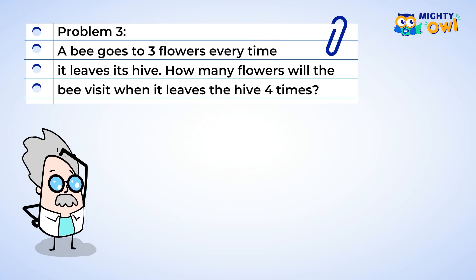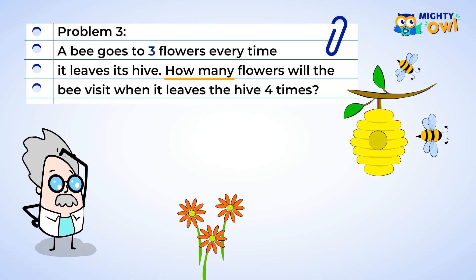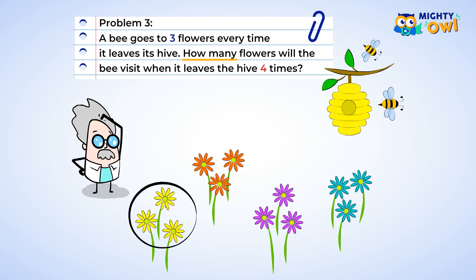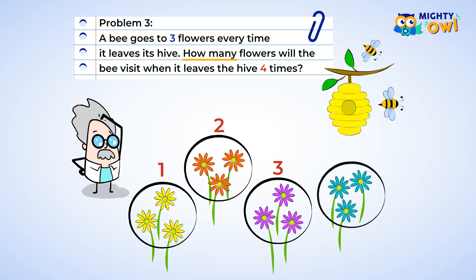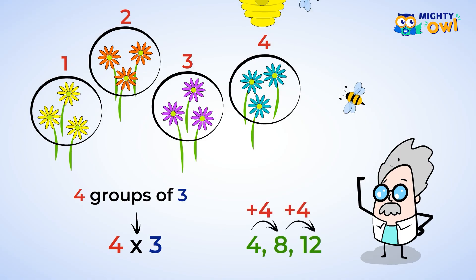Here's a longer example to practice writing multiplication. A bee goes to three flowers every time it leaves its hive. How many flowers will the bee visit when it leaves the hive four times? The first time the bee leaves, it goes to three flowers — this is the first group. The next time it leaves, it goes to another three flowers, the second group. It leaves again and one more time for a total of four times, or four groups. Each time it leaves, it goes to three flowers, giving you four groups of three. You can write this as four multiplied by three. Using skip counting, you'll find the answer is twelve.